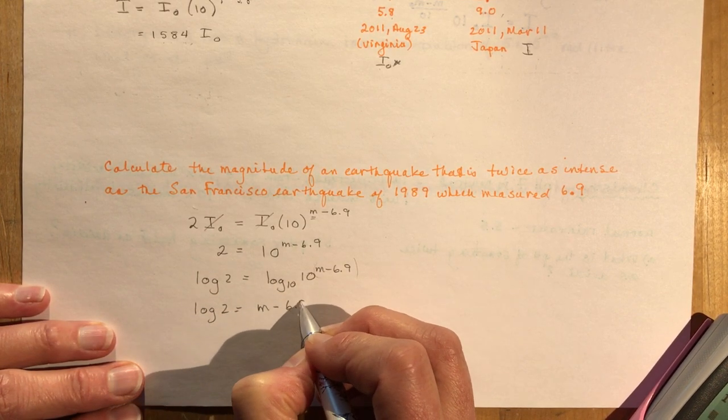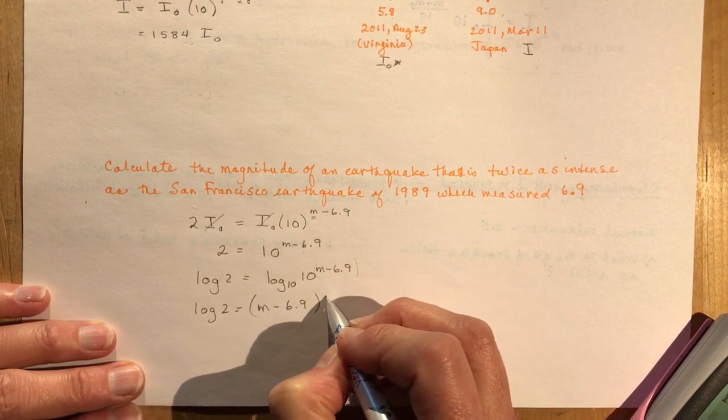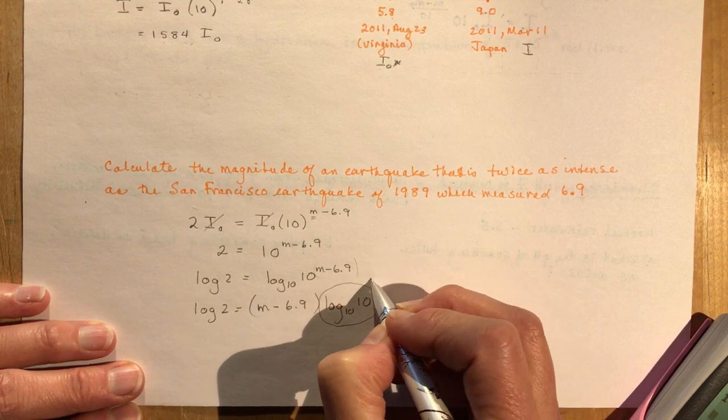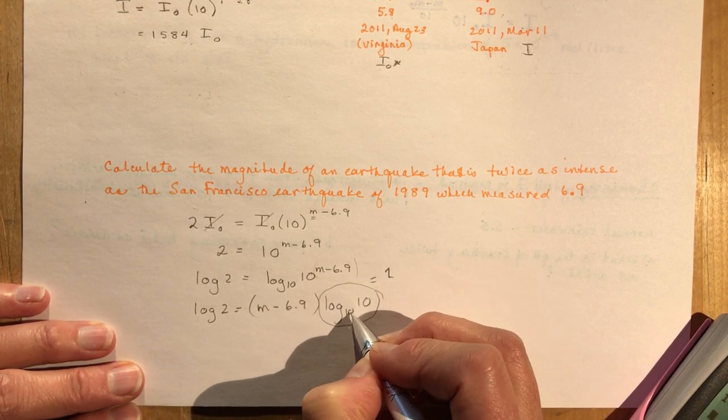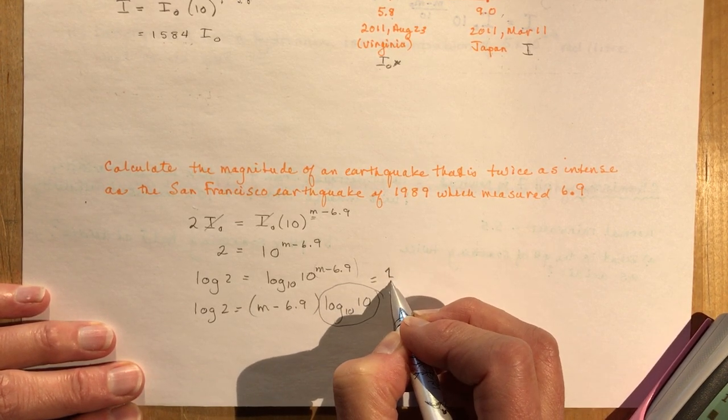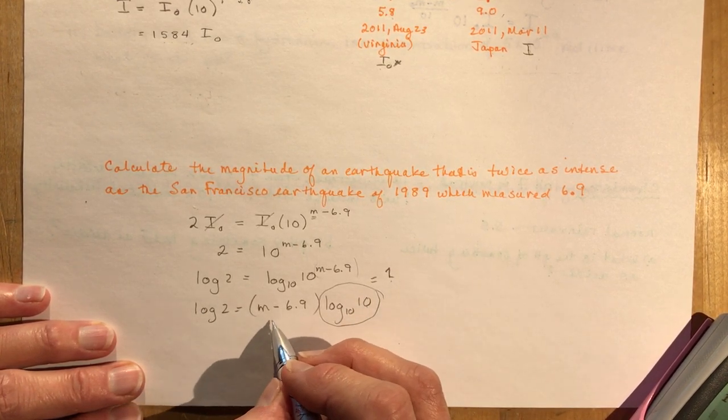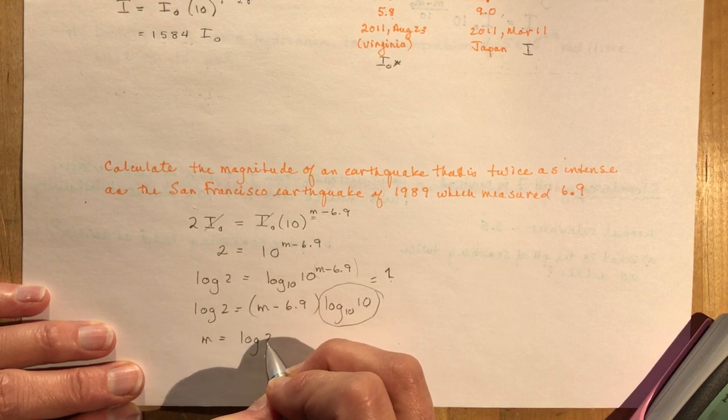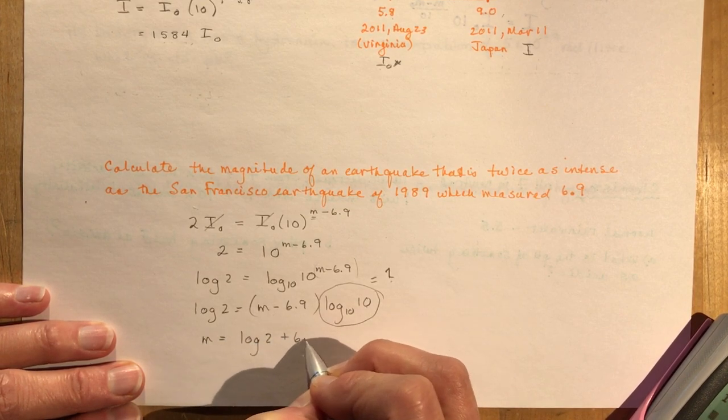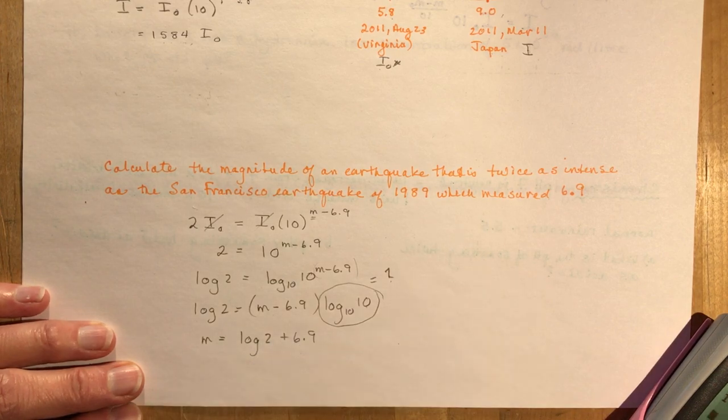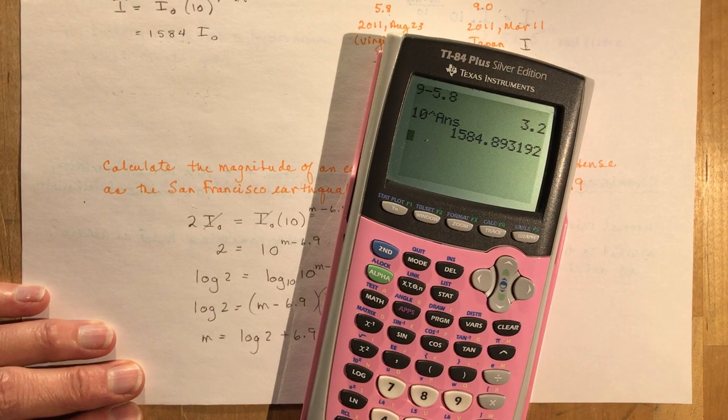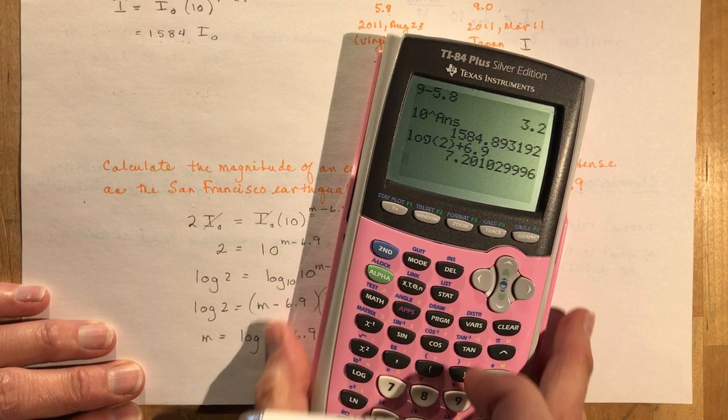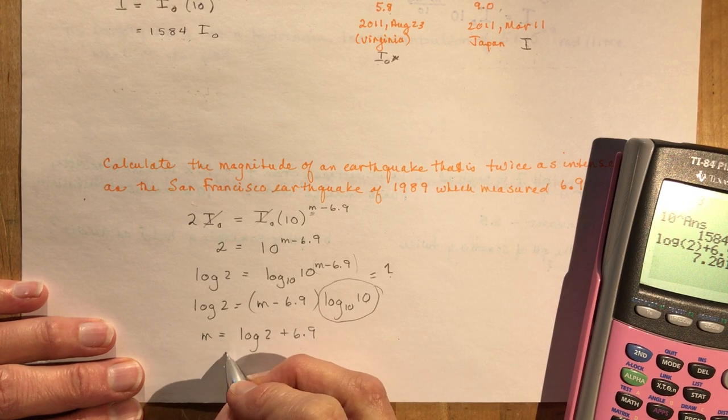So this is M minus 6.9 times the log base 10 of 10. And what's this equal to? That's just equal to 1. What do I raise 10 to to get 10? You'd say 1. So now all I have to do is solve for M. M is going to be equal to the log of 2 plus 6.9. So let's say the log of 2 plus 6.9 and I get 7.2 approximately.